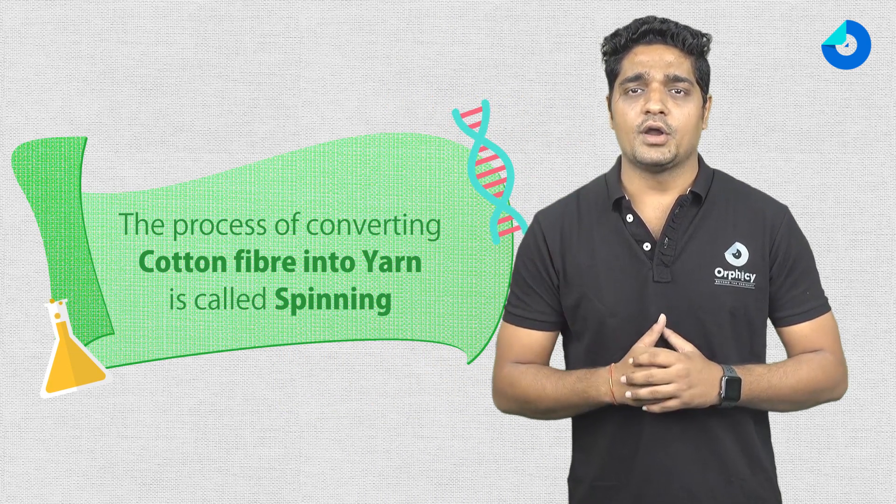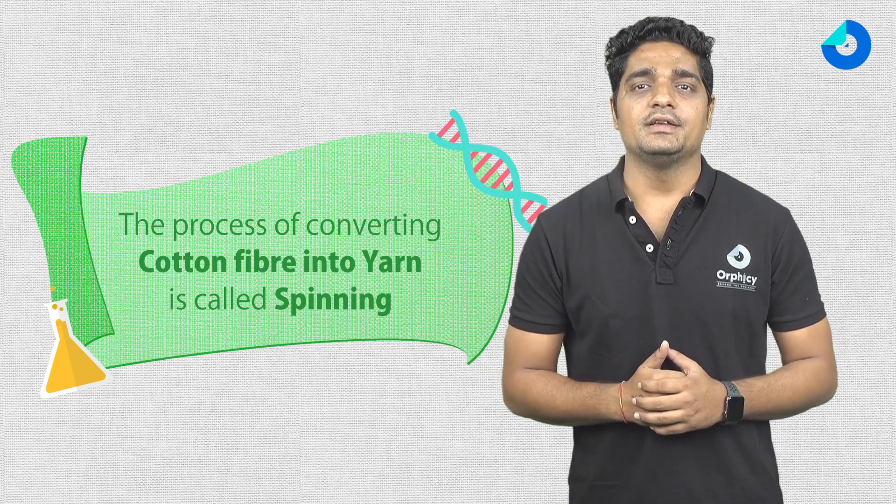We get varieties of things obtained from cotton fiber — for example, bag sheets, towels, and clothes. In order to make these things, we cannot use cotton fiber directly, because it does not provide the required strength and length. So to make these things, firstly we need to convert cotton fiber into yarn. The process of converting cotton fiber into yarn is called spinning.